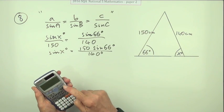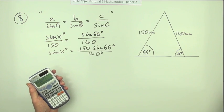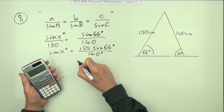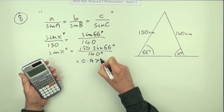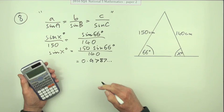Let's press the buttons. And you get 0.9787 and so on. And of course that's just 140 there.